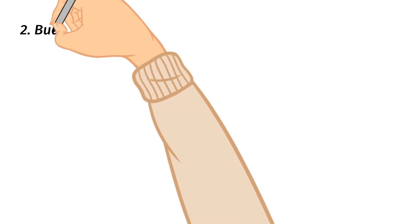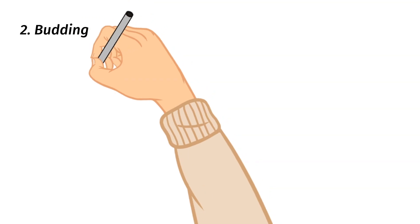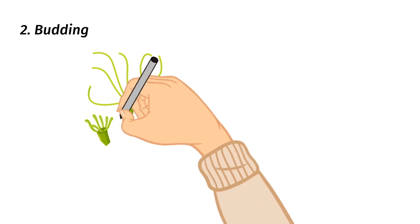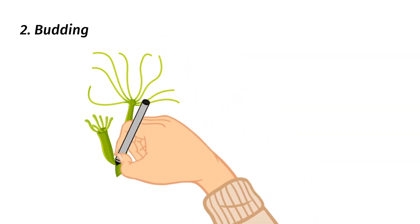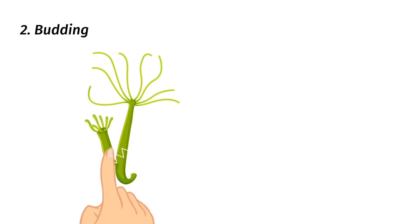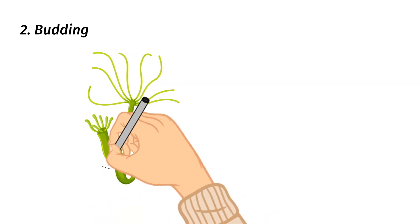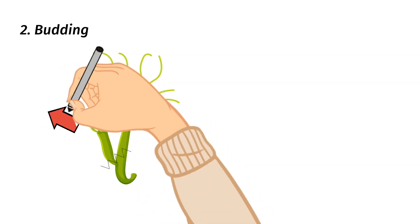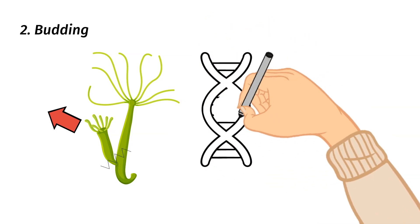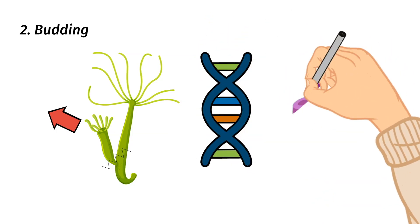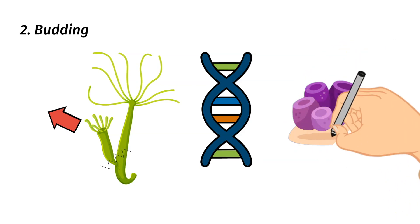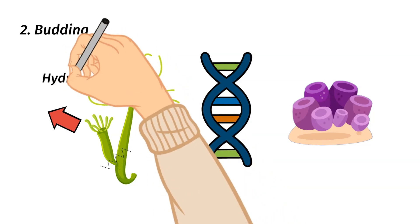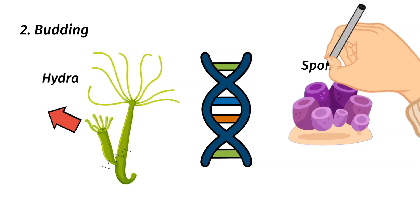Now let's talk about the next type of asexual reproduction: budding. Budding is when a new organism actually grows on another organism. While it grows it stays attached, and then when it is fully grown it detaches from the parent organism. Because there is only one parent, it is exactly genetically identical to the parent. Budding is very common in plants and fungi, but it can also happen in animals — some examples are hydras and sponges.